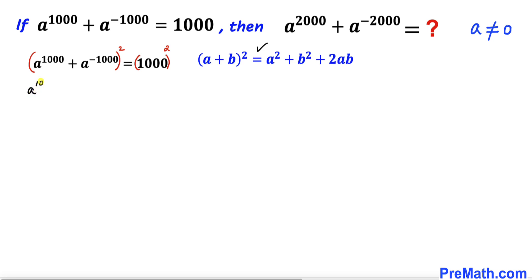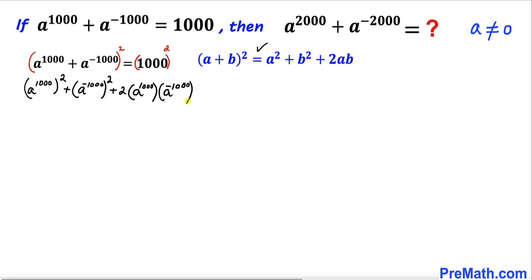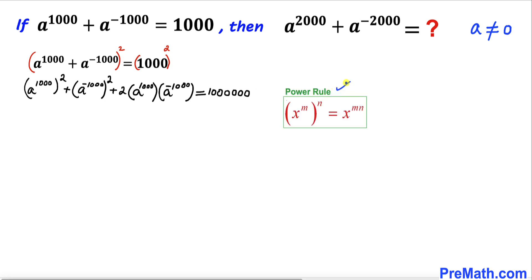So our left hand side can be written as (a^1000)² + (a^(-1000))² + 2·(a^1000)·(a^(-1000)), and on the right hand side, the square of 1000 is simply 1,000,000 — that means we're going to have six zeros. Now let's recall the power rule and apply it on these first two terms.